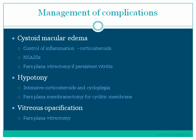Hypotony is managed by intensive corticosteroids and cycloplegia to help the ciliary body recover. However, if a cyclitic membrane is present, then pars plana vitrectomy needs to be done. Vitreous opacification needs to be handled by surgery in a few select cases, in which case pars plana vitrectomy is the treatment of choice.